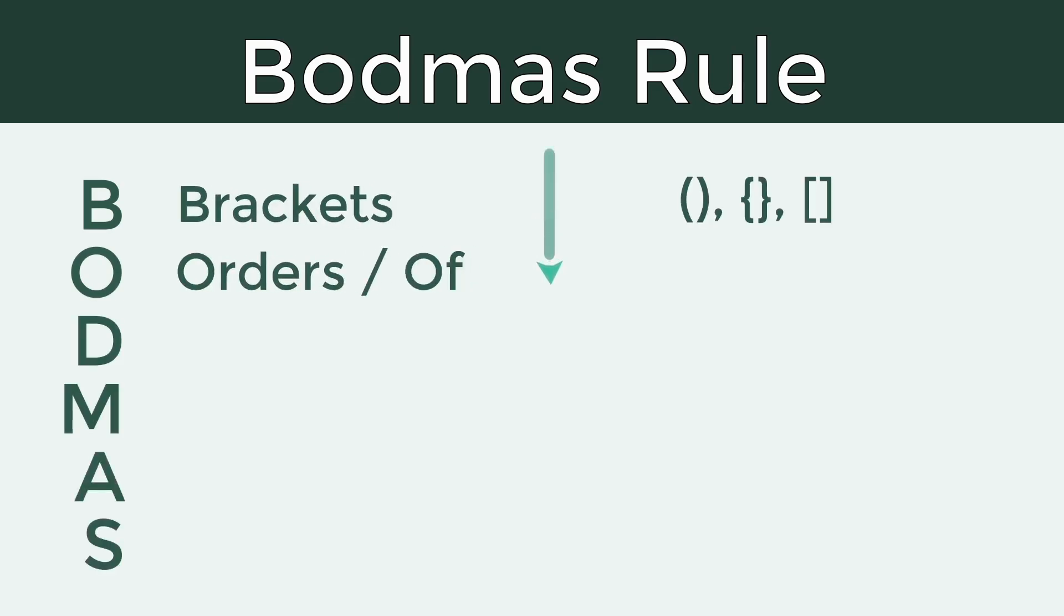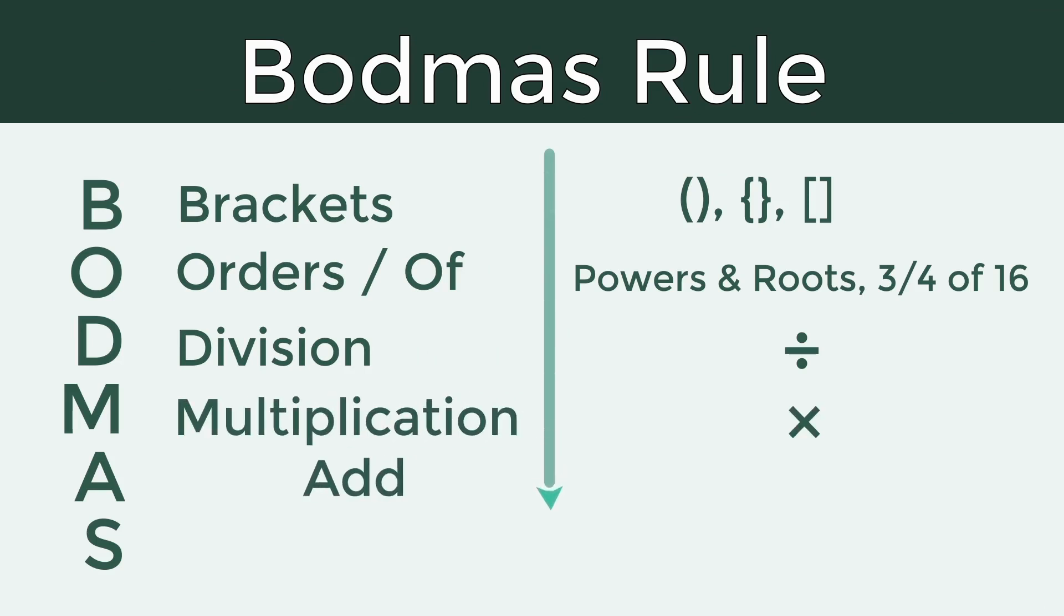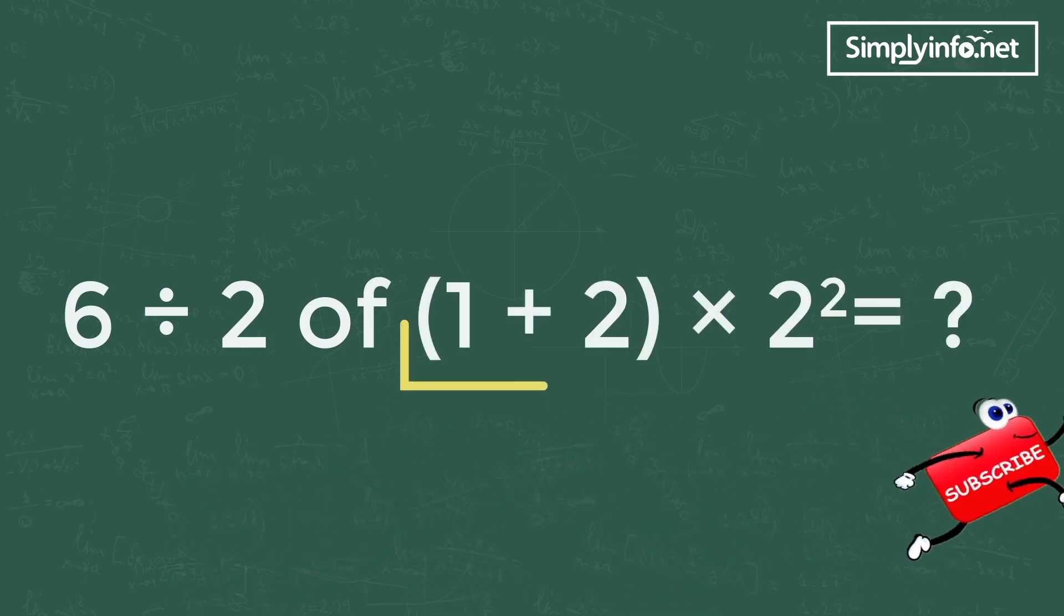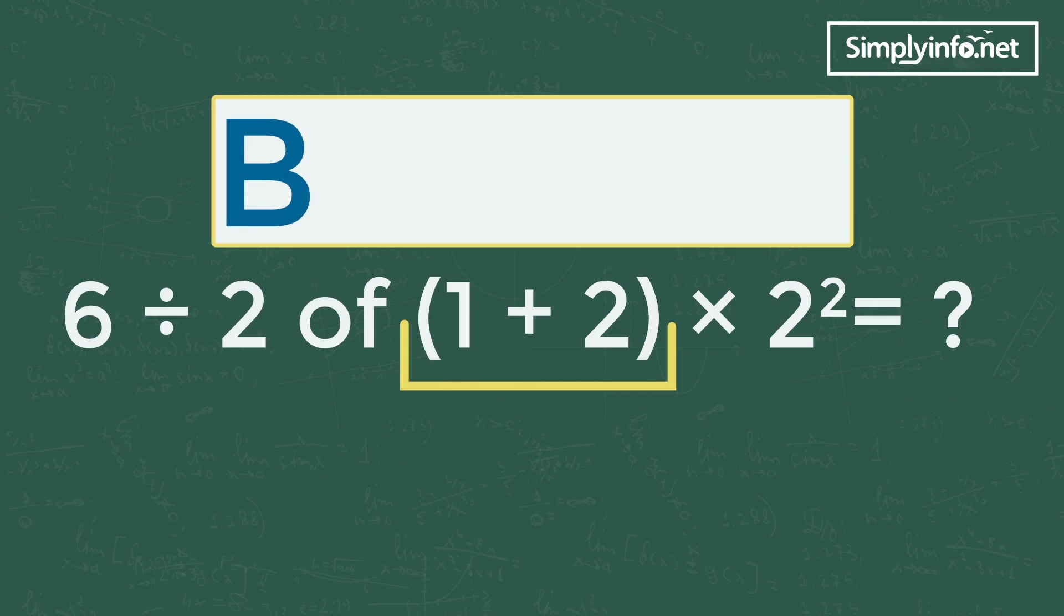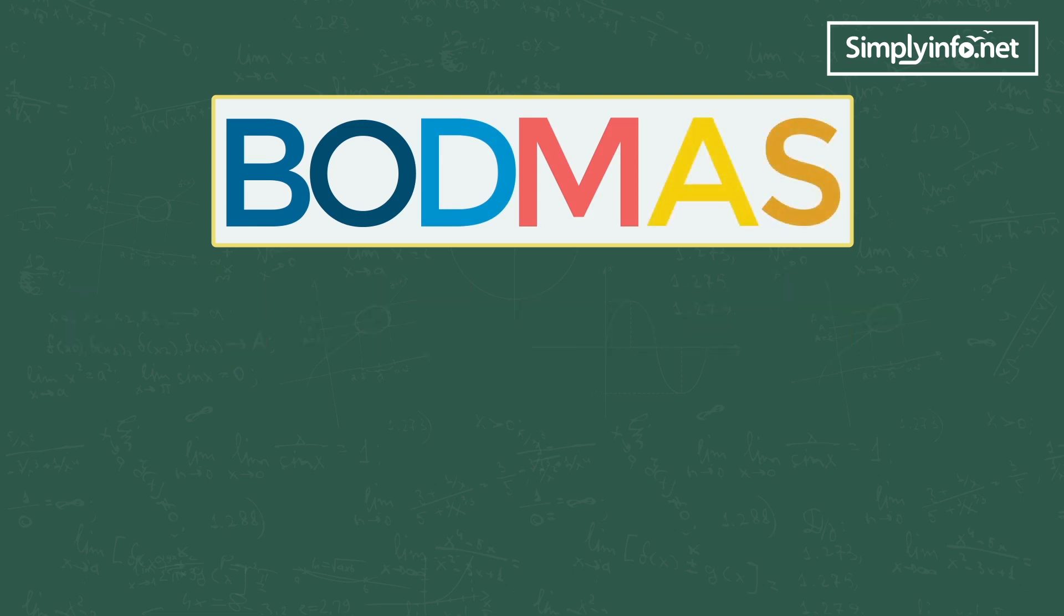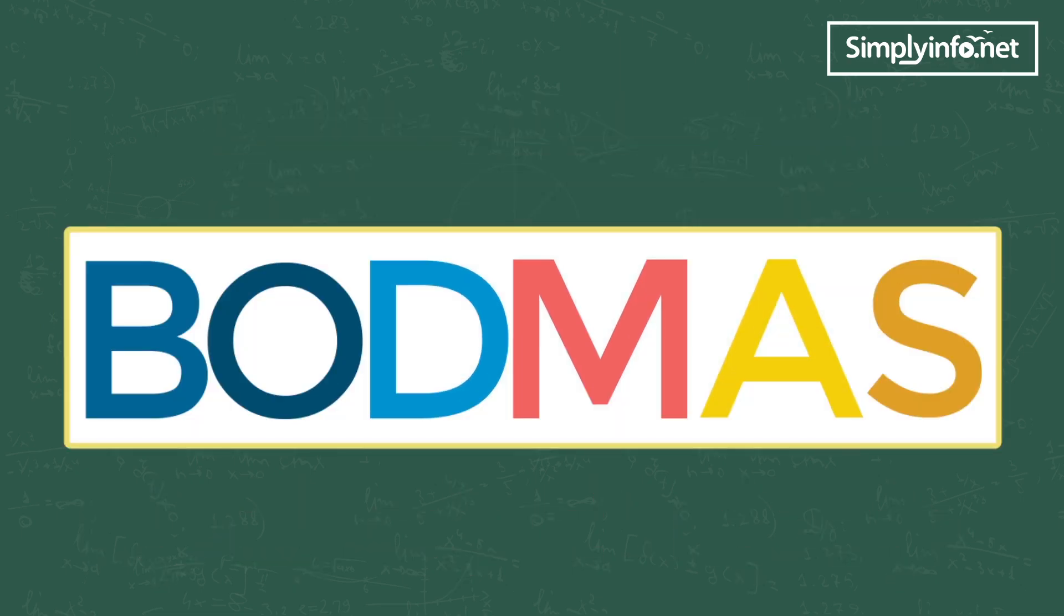Let's see what is BODMAS rule. The full form of BODMAS is Brackets, Orders or Of, Division, Multiplication, Addition, and Subtraction. According to BODMAS rule, if an expression contains brackets, we have to first solve the bracket, followed by order or of, and then division, multiplication, addition, and subtraction from left to right.